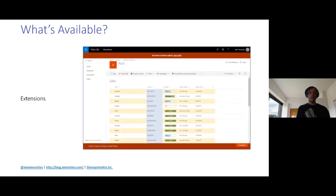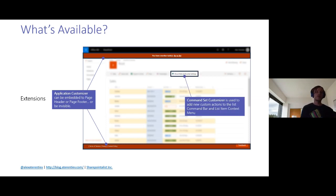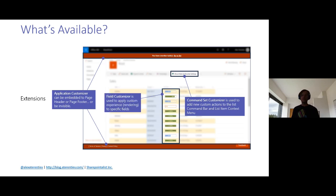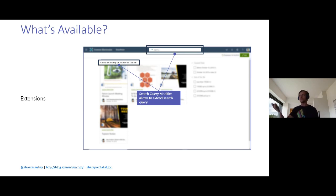Extensions allow you to extend or customize modern SharePoint UI and behavior. There are four extensions: Application Customizer lets you add a custom header and footer or inject custom JavaScript and CSS. Command Set Customizer adds custom buttons to the list command bar and context menu. Field Customizer provides custom rendering for list columns. Search Query Modifier extends the search query before it's sent to the server — for example, translating a query using Azure into multiple languages to get results for all of them.